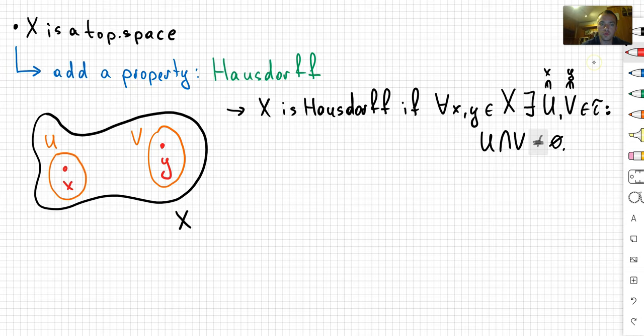Let me show you the simplest example, the standard example. It's going to be the real line with the standard topology. So the real line with the standard topology is the line R, and we know that our topology is generated by basis B which is given by the open intervals (a,b) where a is strictly less than b.